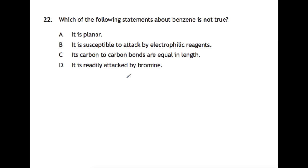Question 22. Which of the following statements about benzene is not true? So let's draw out benzene. So benzene is a special molecule with an unusual structure. We have the ring of six carbons. All of the bonds are the same length within this, so that C is true. All of the carbons are SP2 hybridized, so this is a planar arrangement here. So A is true. And it's susceptible to attack by electrophilic reagents. So it undergoes electrophilic substitution reactions. So this is true. But it cannot be attacked by bromine. It doesn't undergo addition reactions easily. So D is our answer.